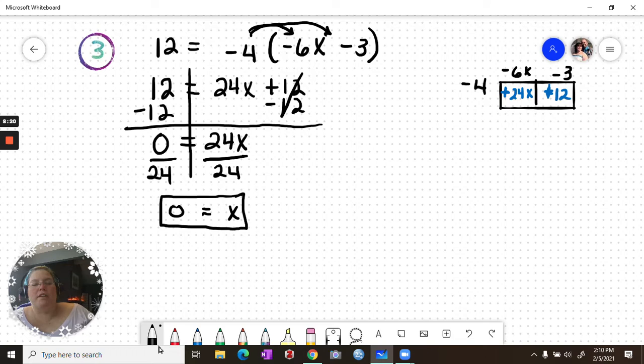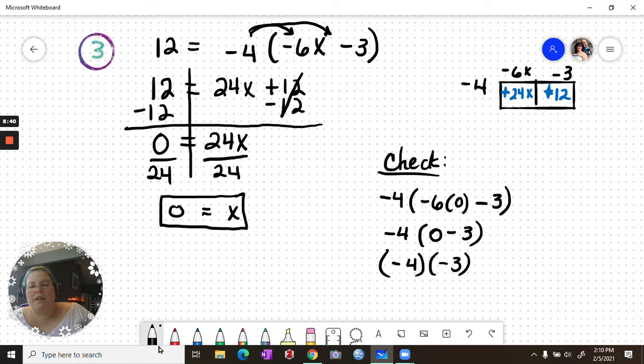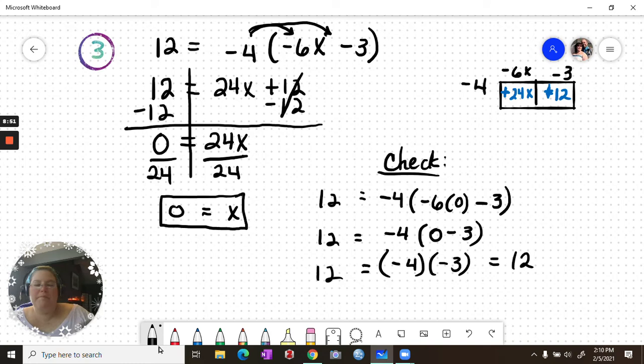Double check that. So negative 4 times negative 6 times 0 minus 3. Negative 4 times 0 minus 3. Negative 4 times negative 3 equals positive 12. So we get 12 equals 12. Again, pause here if you need to write this down, and we will clear our screen and do one more equation solving example.